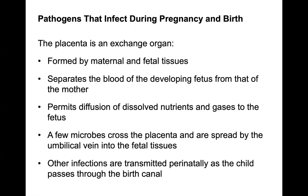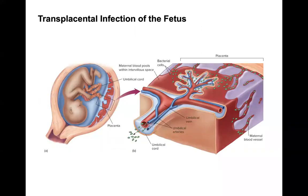Pathogens can also infect during pregnancy and birth. The placenta is an exchange organ formed by maternal and fetal tissues that separates fetal blood from maternal blood while permitting diffusion of nutrients and gases. A few microbes can cross the placenta and spread via the umbilical vein into fetal tissues, while other infections are transmitted perinatally as the child passes through the birth canal.